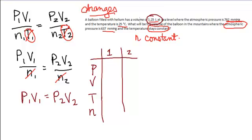So, the helium balloon is filled to a volume of 1.25 liters, and that means my V1 is 1.25 liters. It is probably useful to go ahead and write units in this table. The atmospheric pressure is 762 millimeters of mercury. That's my starting condition. So, I'll write 762. Again, it's useful to squeeze in the units there. The temperature is 25 degrees Celsius.